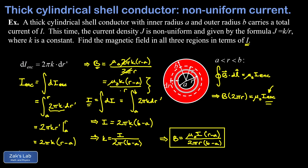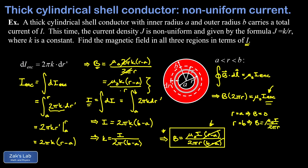We can do a couple of crude checks at the boundaries between regions. At r = a, the term (r − a) in the numerator becomes zero, giving B = 0, which agrees with our result for the interior hollow cavity. At r = b, we have a factor of (b − a) in both numerator and denominator that cancels, leaving the classic result μ₀I / 2πr, which agrees with our calculation for r greater than B.